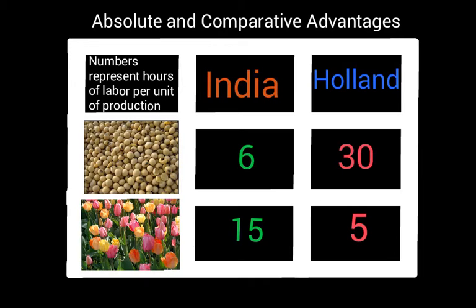Let's talk about the law of absolute advantages first. Let's say that we're looking at two example countries: India and Holland. They can produce two products — soybeans and tulips. It takes India six hours to produce one bushel of soybeans and it takes Holland 30 hours to produce one bushel of soybeans. These are all hypothetical numbers. It takes India 15 hours to produce one case of tulips and Holland five hours to produce one case of tulips.